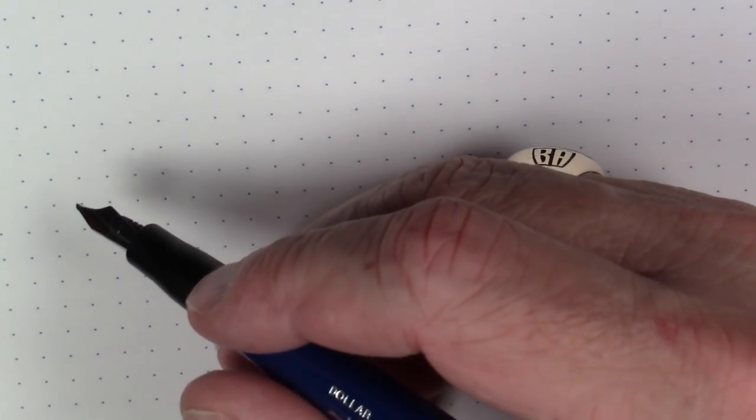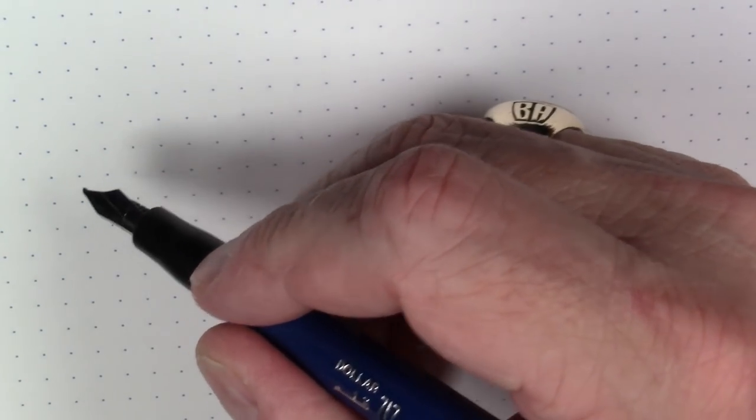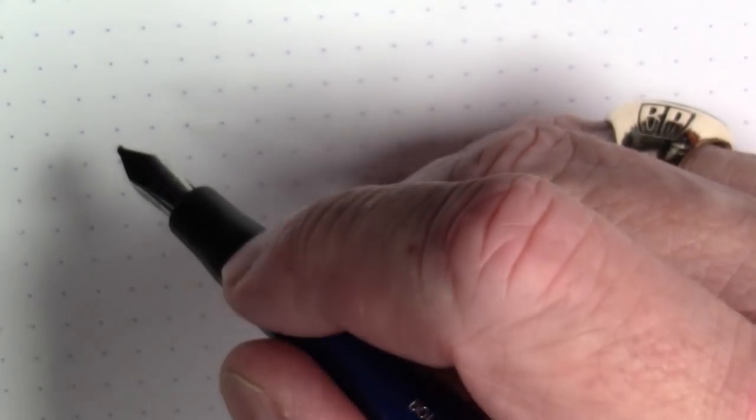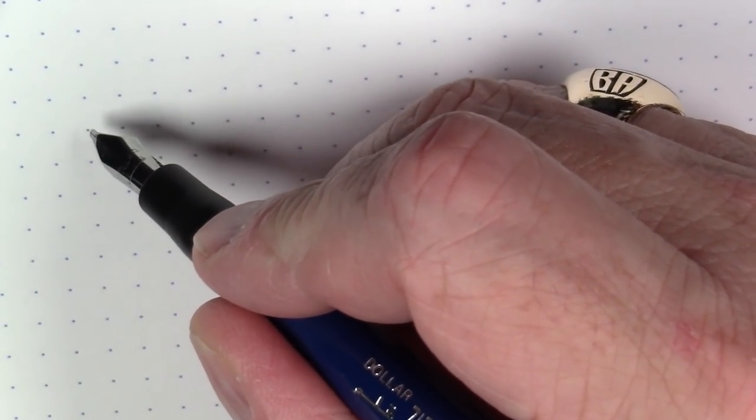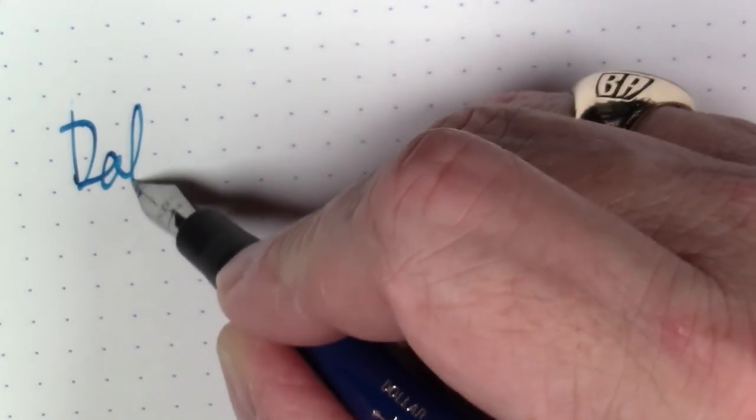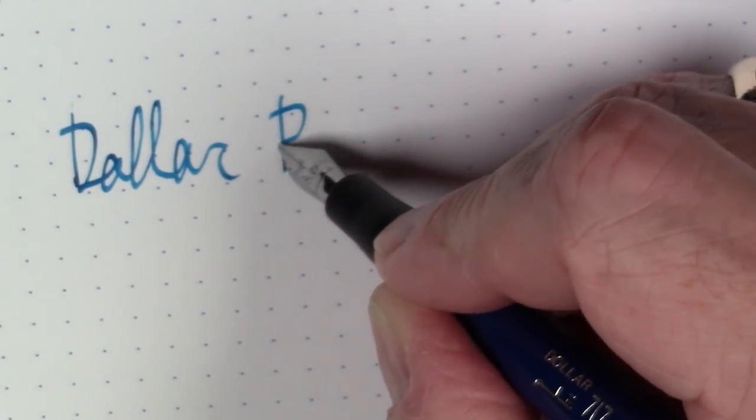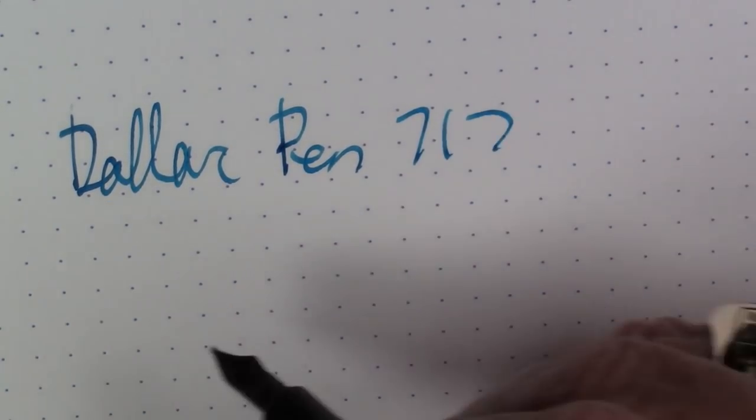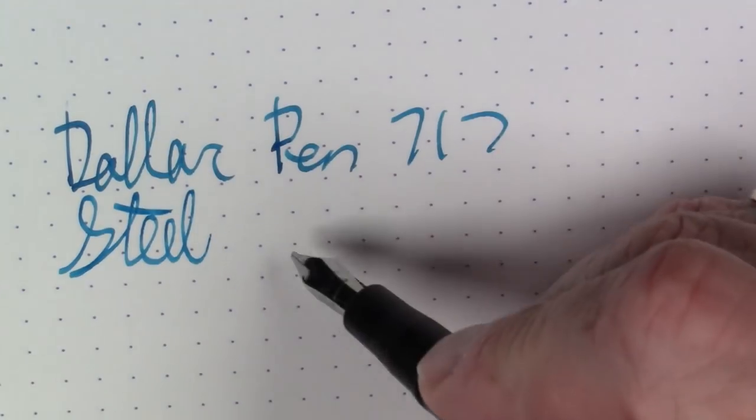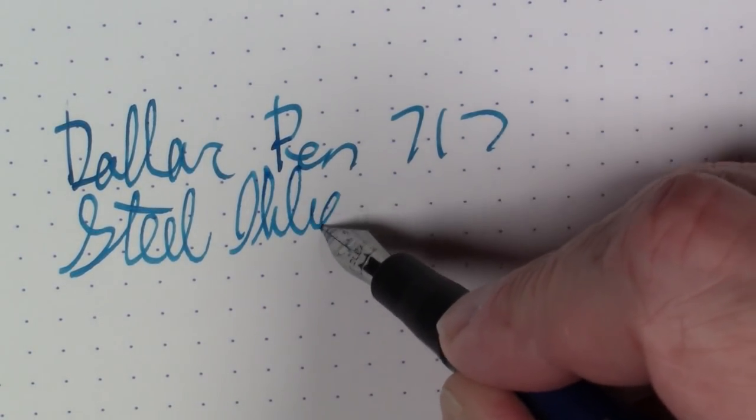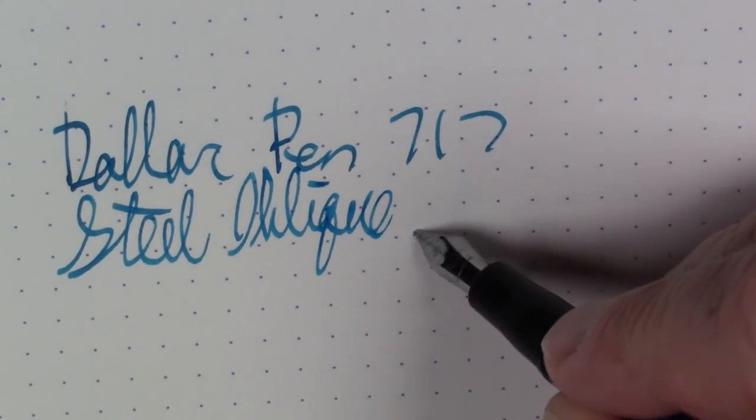Okay, now we're going to look at the solid color version of this pen with what looks to be an oblique stub nib. So this is the Dollar Pen Model 717 also, but this is a steel oblique stub.